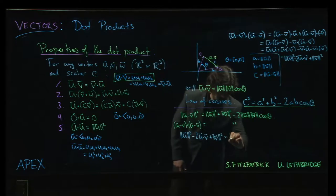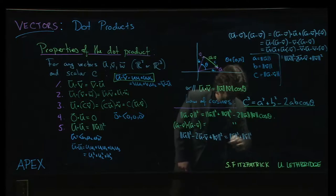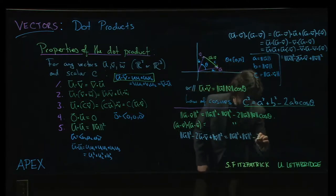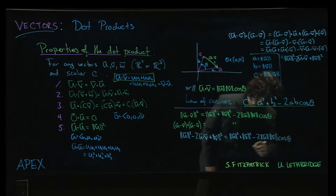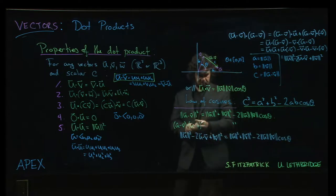and that's going to be equal to magnitude of u squared plus the magnitude of v squared minus 2 magnitude of u times the magnitude of v times cos theta. And now I bet you can already see it.